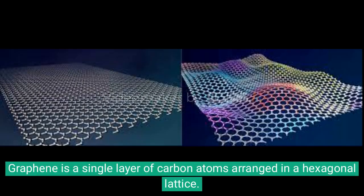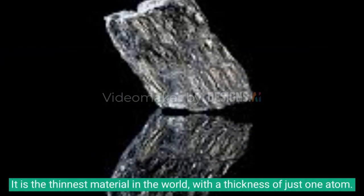Graphene is a single layer of carbon atoms arranged in a hexagonal lattice. It is the thinnest material in the world, with a thickness of just one atom.